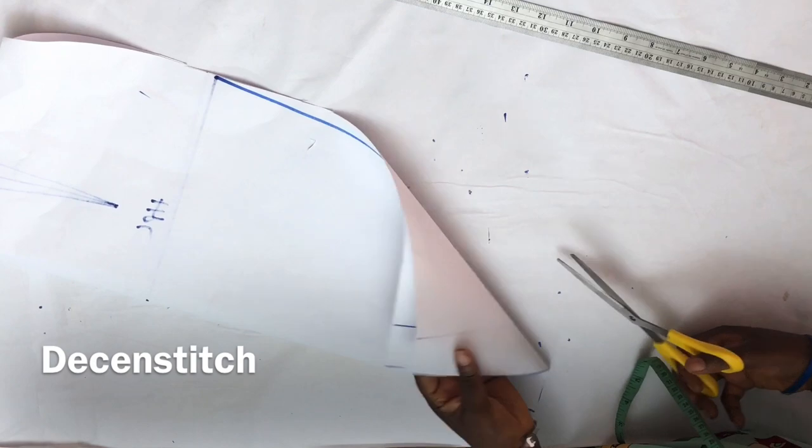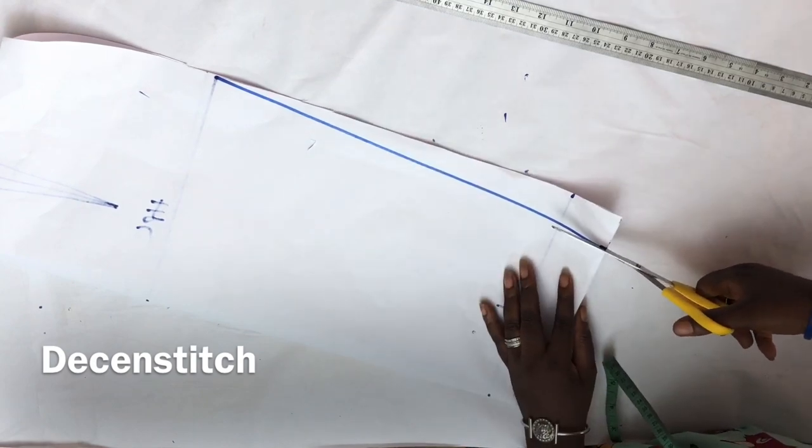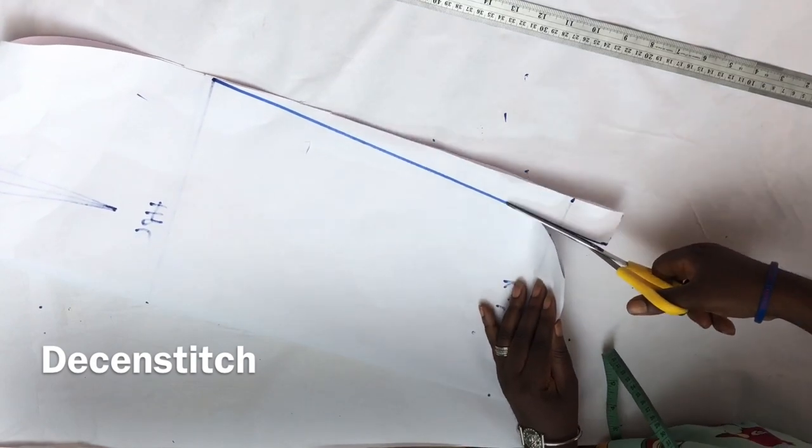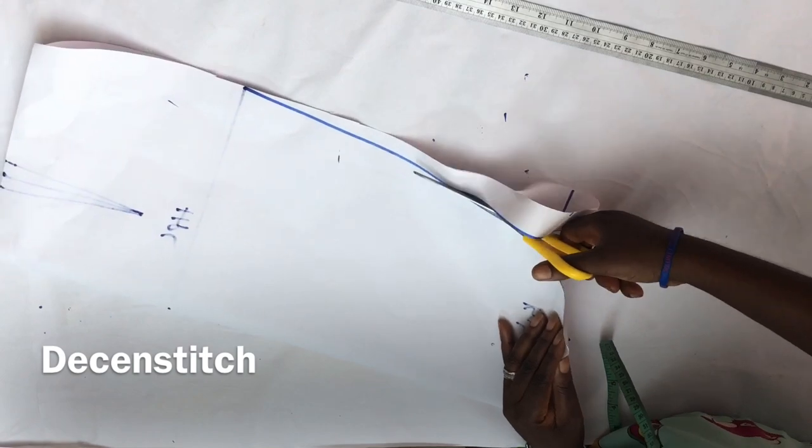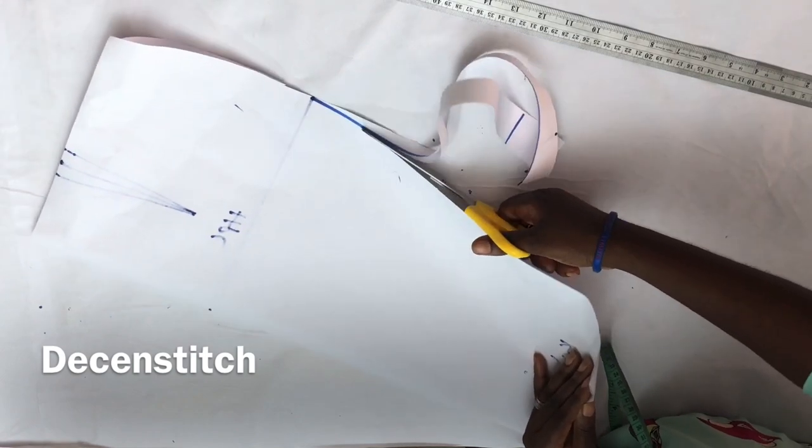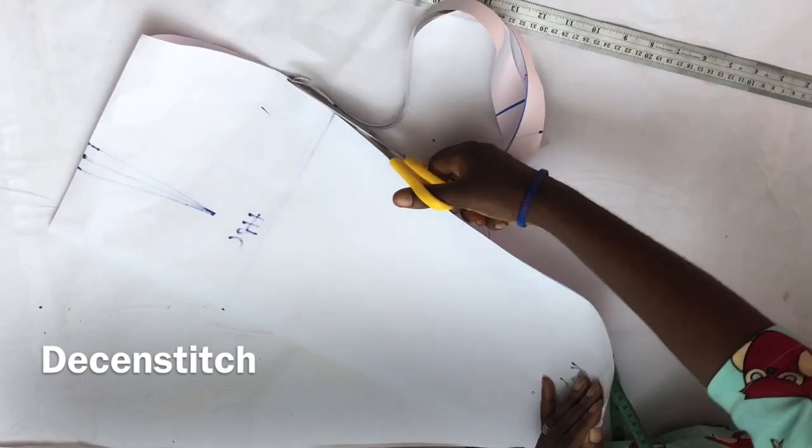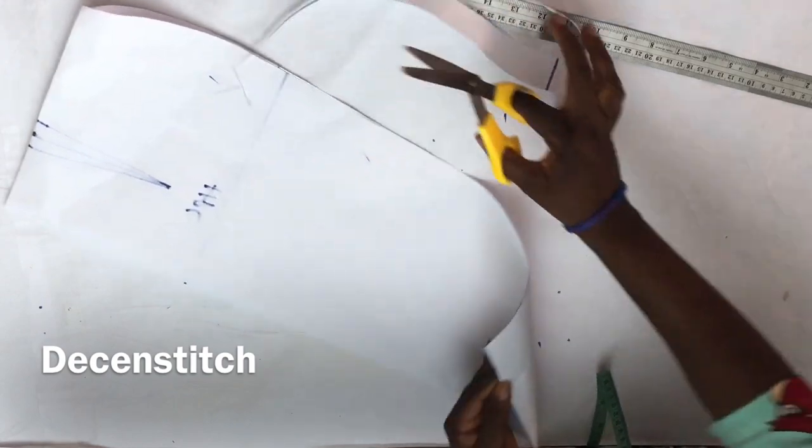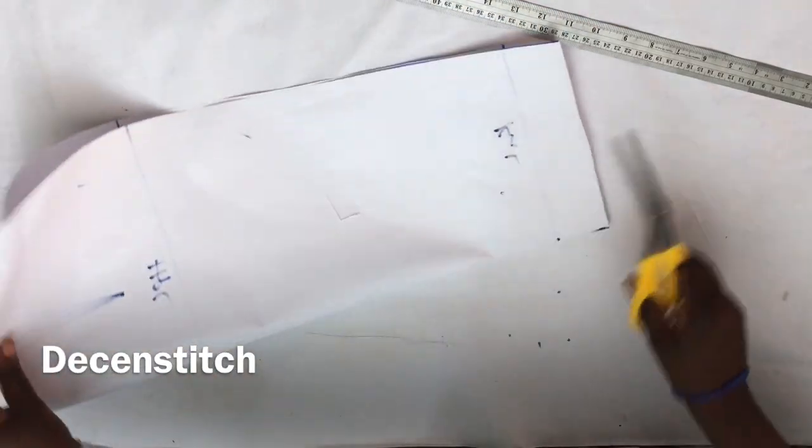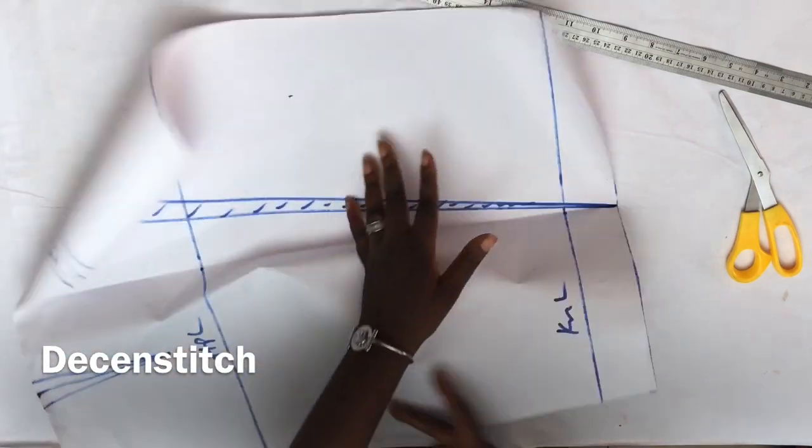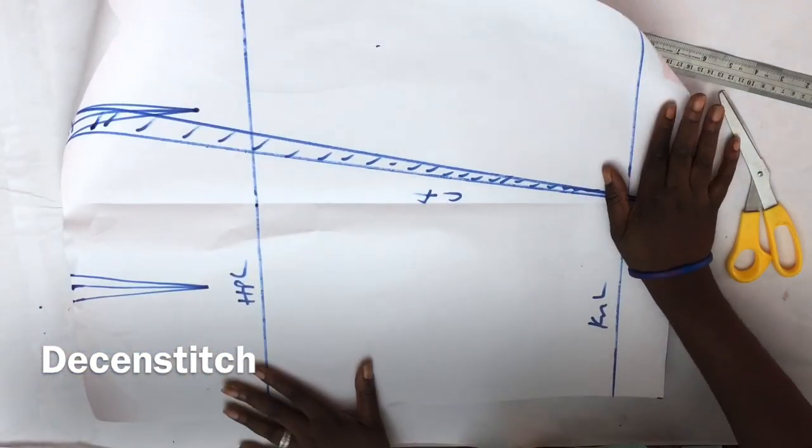For the front piece, I'll cut the two at the same time. Like I said earlier, it's faster and they'll be equal. Now it is a pencil skirt.